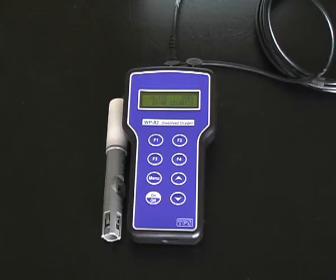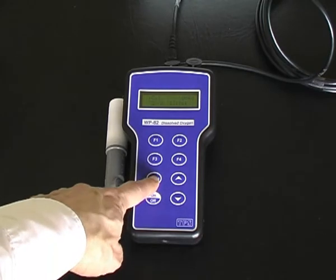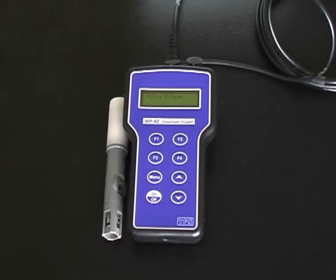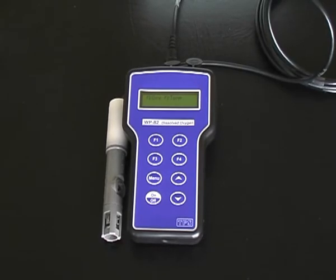To calibrate the TPSWP82Y, the procedure is the same as for the 90FLT. Press menu, press F1 for cal, and press F1 to calibrate instead of pressing enter.